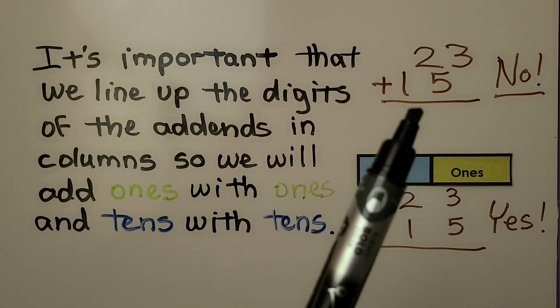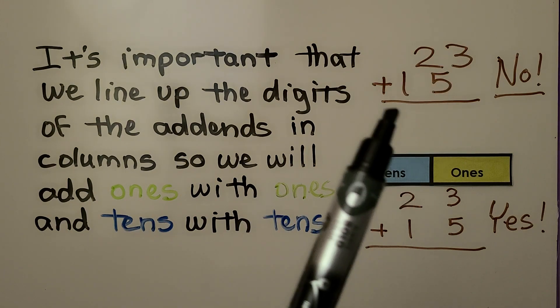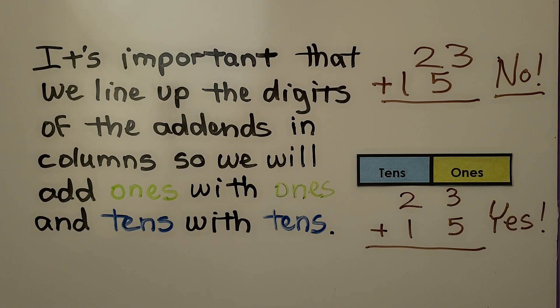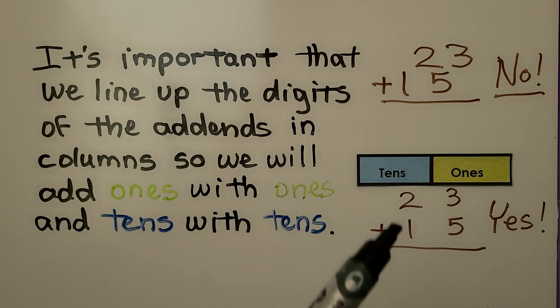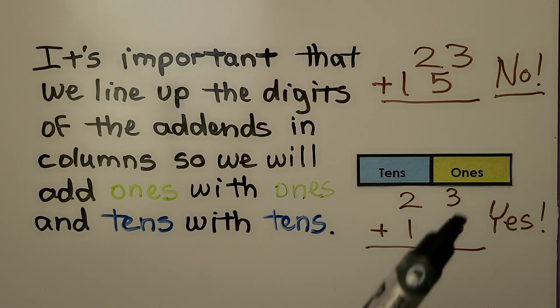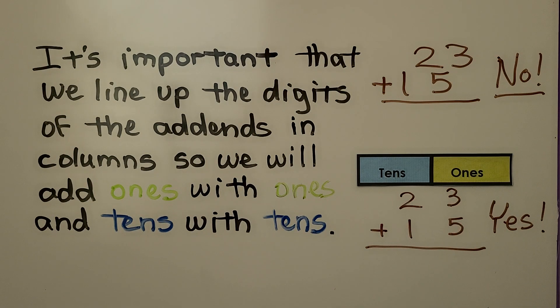If we write it sloppy like this, we're not going to add the correct numbers together. We could make a mistake. We need to line up the ones with the ones and the tens with the tens so we add the ones to the ones and the tens to the tens.